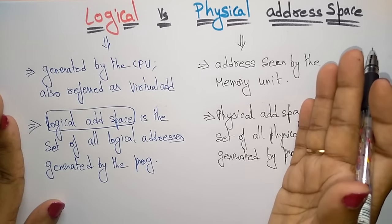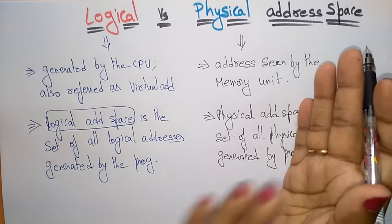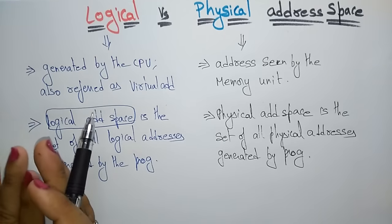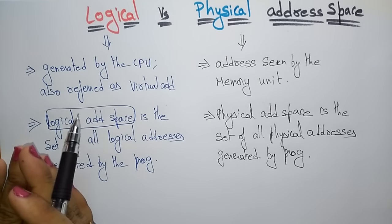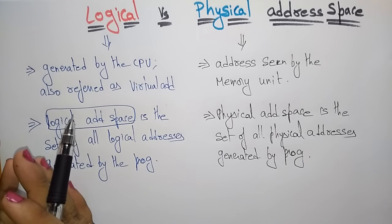Physical address is always related to the memory unit, and logical address is also referred to as a virtual address — it is generated by the CPU.